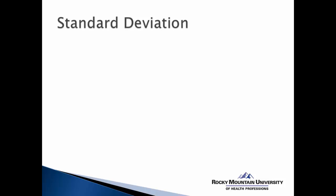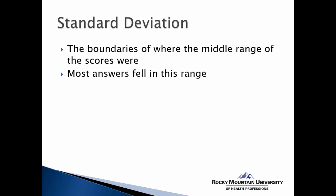Well here are some examples of how we can talk about standard deviation in a way that could be more accessible. So we might use an example of standard deviation represents the boundaries of where the middle range of the scores were, in other words, representing what that 68% of the scores in a normal distribution are found. Most answers fell in this range. Again, this is referring to that idea that the majority of scores in a normal distribution fall within plus and minus one standard deviation above and below the mean.